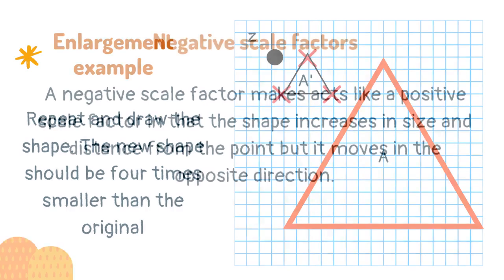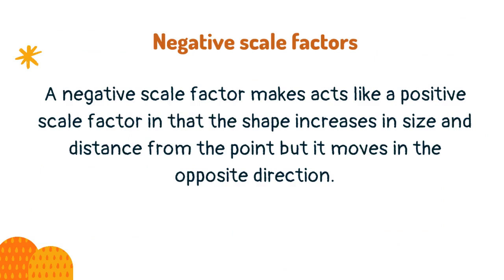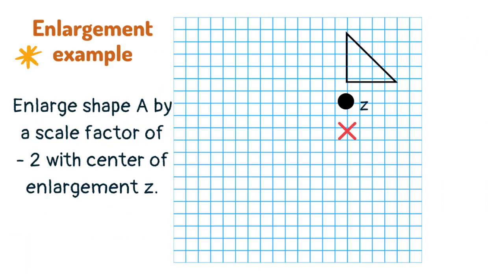A negative scale factor acts like a positive scale factor in that the shape increases in size and distance from the point, but it moves in the opposite direction. First find the distance from the point of the shape to the centre of enlargement, then double this in the opposite direction.